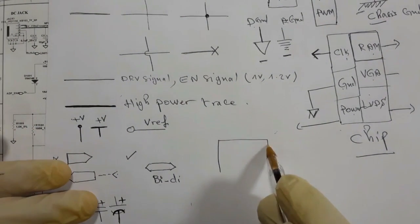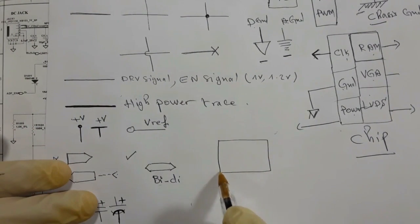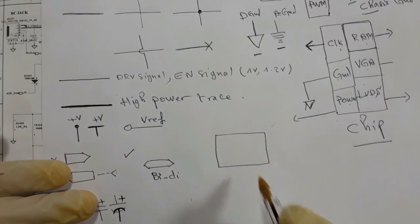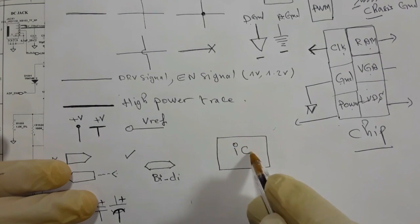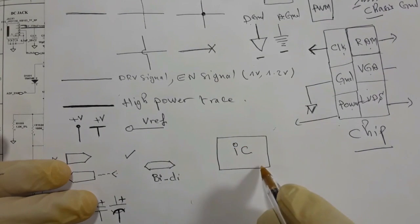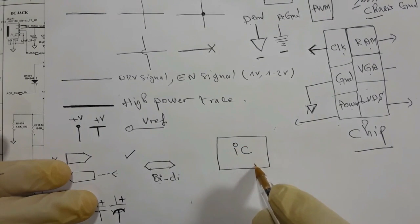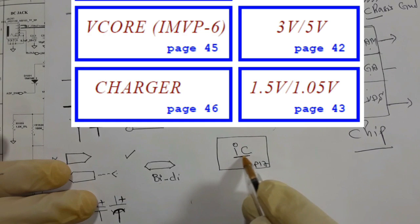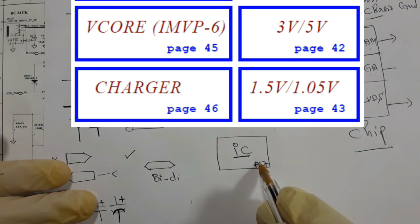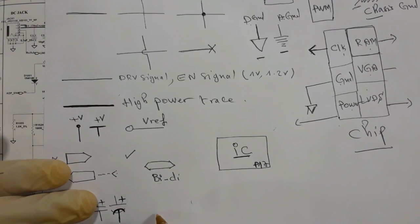For example, you can find an IC with a label like P17, which means this IC exists on page number 17 in the schematic.